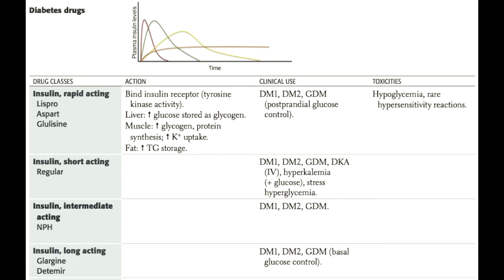Usually these are taken right before meals. Regular insulin, shown in green on the graph, is fairly rapid-acting, though not as quick as the previous three, and it tends to last longer as well. The mainstay intermediate-acting insulin is shown in yellow, and is NPH, or Neutral Protamine Hagedorn.